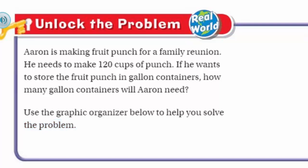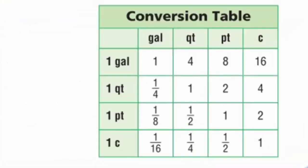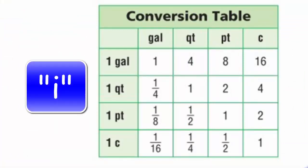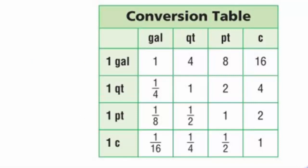First, let's look at our conversion table. At first glance it looks confusing, but if you recall, it's like a little grid. Looking across: one gallon is equal to four quarts, one gallon is equal to eight pints, and here's something we didn't have in previous videos — there are 16 cups in one gallon.